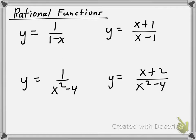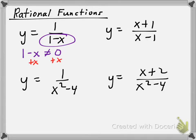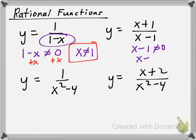Now let's talk about finding the domain of rational functions. You just need to make sure the denominator is not 0. For 1 over (1 minus x), we write 1 minus x cannot equal 0, so adding x to both sides gives x cannot equal 1. This function is defined for all other real numbers. Similarly, for (x plus 1) over (x minus 1), x minus 1 is not allowed to equal 0, so again x cannot equal 1.